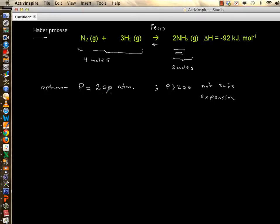So 200 atmospheric pressure is ideal for this. Now the temperature, this is exothermic reaction because you have minus 92 kilojoules per mole of ammonia. So this is exothermic, meaning the heat is on the product side.